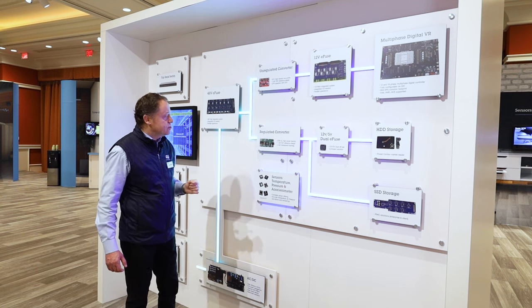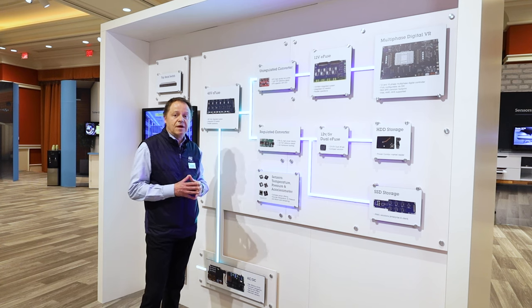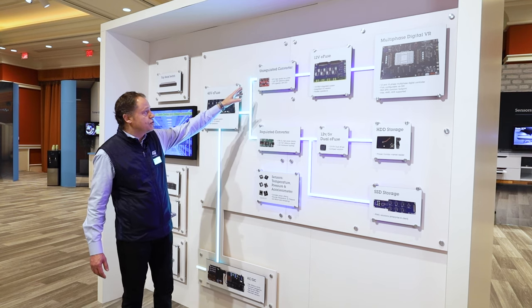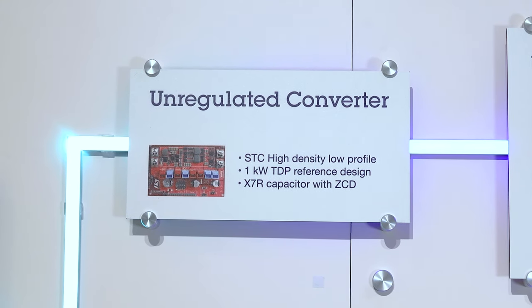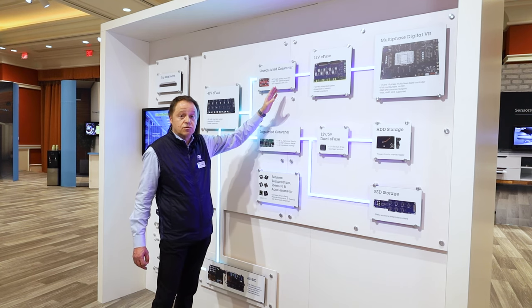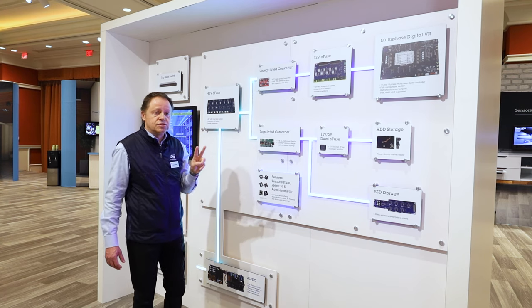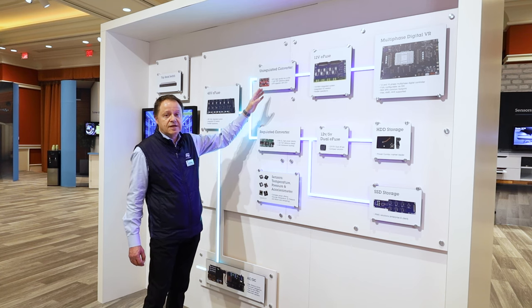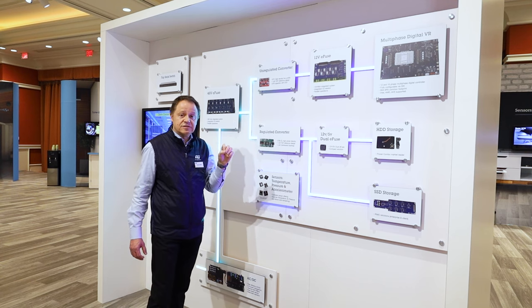For both architectures ST has maximized the efficiency and the power density. For the unregulated converters, starting from the top, this converts the 48V line to a lower voltage line, typically using a 4-to-1, 5-to-1, or 10-to-1 conversion ratio. We have two main topologies: the STC, the switched tank converter, and the hybrid STC that can deliver up to one kilowatt thermal design power in a very high density and low profile configuration.